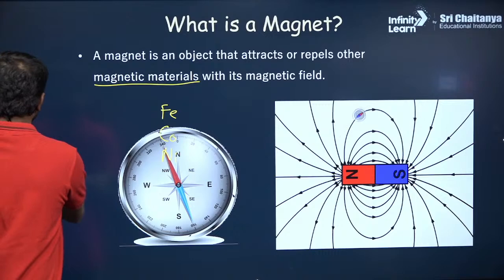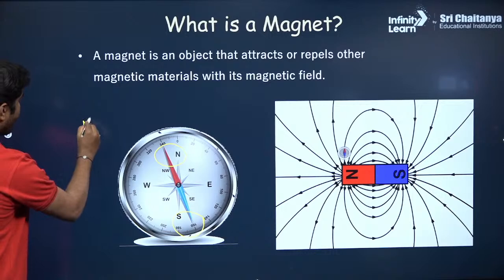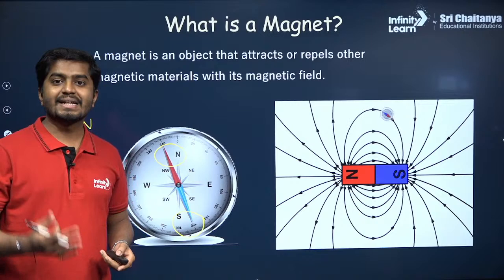This is called a compass or compass needle. It has a north pole and a south pole. So we can draw something like this — there is a north and a south. Instead of drawing the whole compass, you can just use an arrow which will represent the magnetic needle or compass needle.